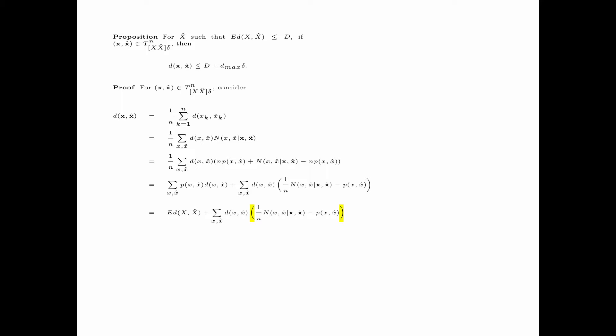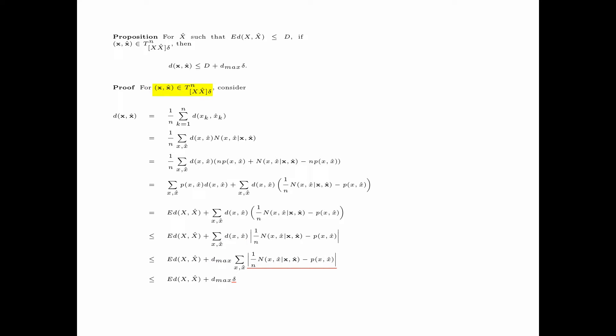For the second summation, the expression inside the parenthesis is upper bounded by the triangle inequality. Now d(x,x̂) is upper bounded by d_max, and the absolute value of the relative frequency minus p(x,x̂) is less than or equal to δ, because the sequences x and x̂ are jointly typical. Finally, the expected distortion between x and x̂ is less than or equal to d. This completes the proof of the proposition.